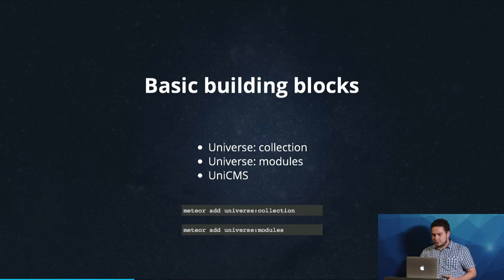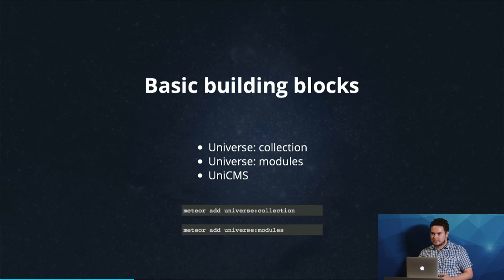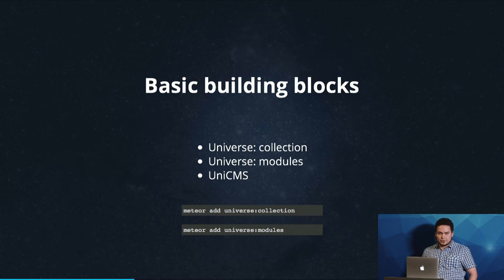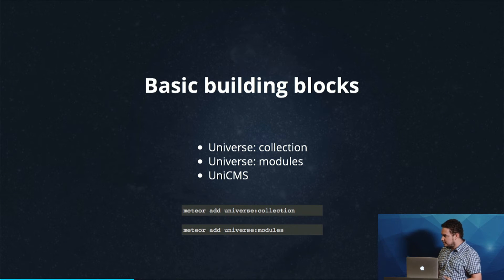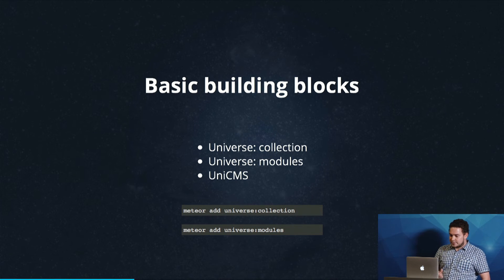The basic building blocks of Universe are three key packages. We have about 30 packages on Atmosphere, but if you'd like to start and check how Universe works, I would advise starting with those first two. The first is something you could call Meteor Collections on Steroids — we built all the low-level functionalities based on this package. The second provides AMD modules in Meteor for more modular architecture. The third is an actual CMS that gives you the ability to create basic elements really quickly.